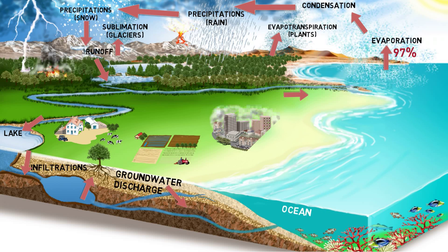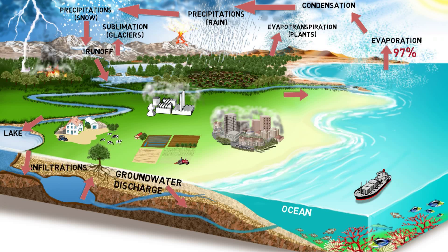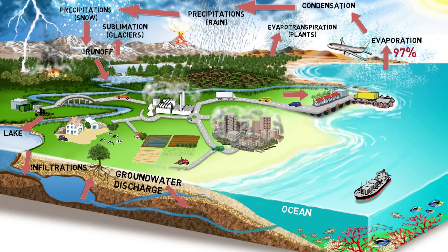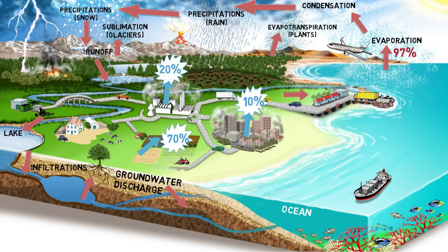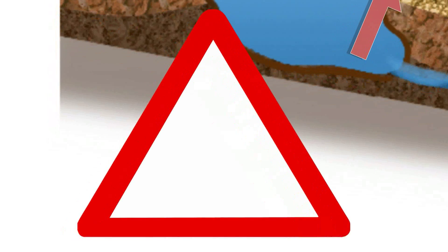Human interferences that alter and harm the water cycle are many, and some are rapidly leading us to a dreadful future. Large-scale geoengineering projects for flood control, water supply, and irrigation make fresh water available for human activities: agriculture at 70 percent, industry at 20 percent, and household consumption at 10 percent.